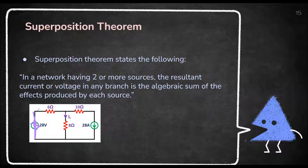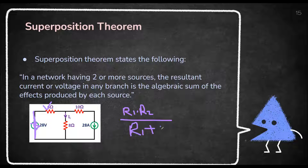First, you will remove the second source. You will replace it by a short circuit because it is a voltage source. Now you can solve it. Six ohm and eight ohm are in parallel. Use the parallel formula: R1 into R2 upon R1 plus R2. You will get an effective resistance. After solving, it will become a series circuit.